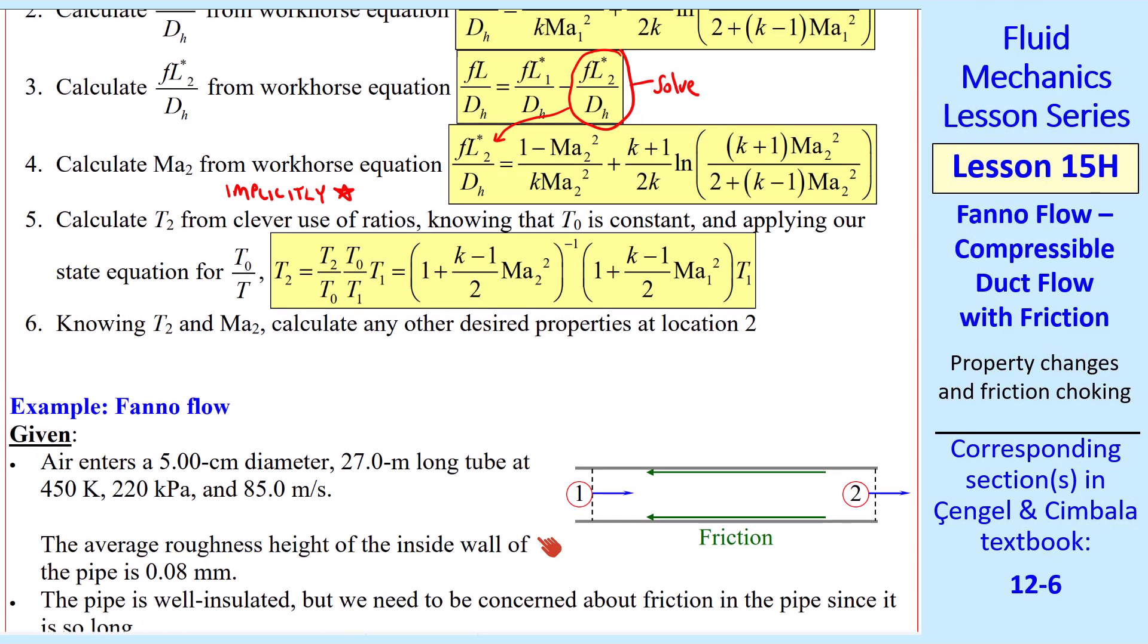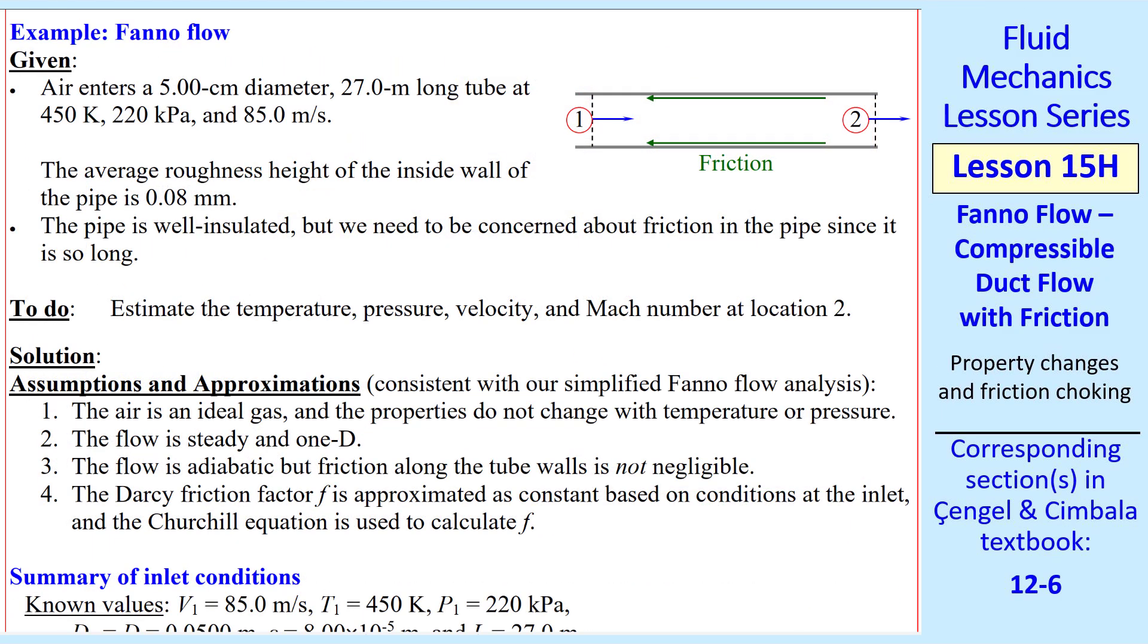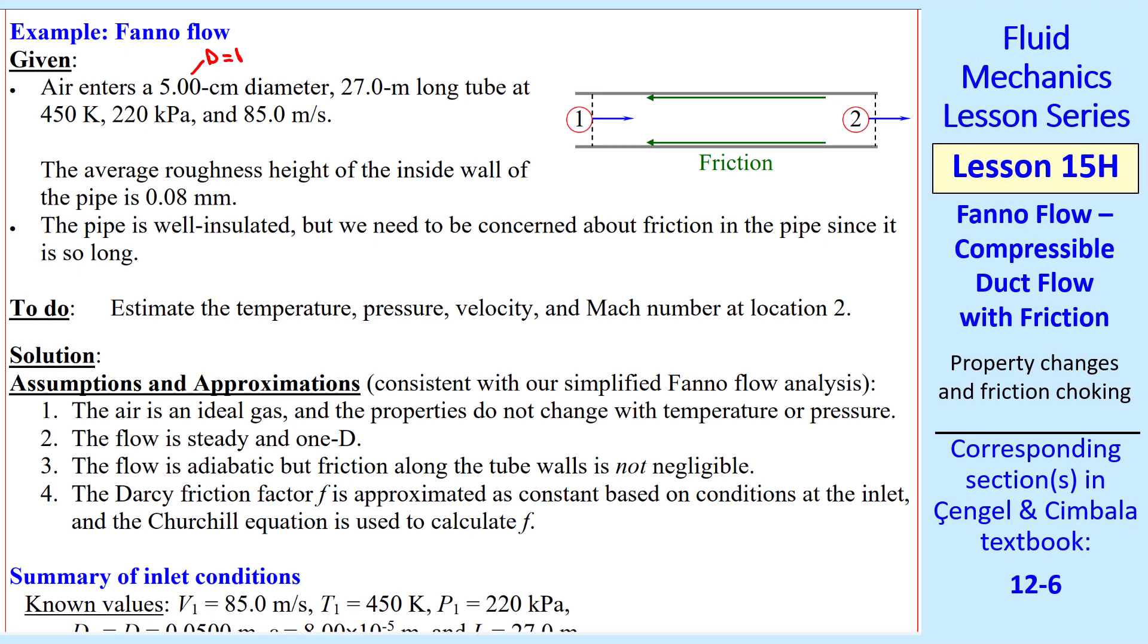Air enters a 5 centimeter diameter, 27 meter long tube. This is D, which is also DH for a round duct. And this is L. We're also given T1, P1, and V1. We are also given epsilon, the pipe roughness. We assume the flow is well insulated, or adiabatic, but we do have friction, since this is a long pipe, 27 meters long. So this is the ideal conditions for Fanno flow.